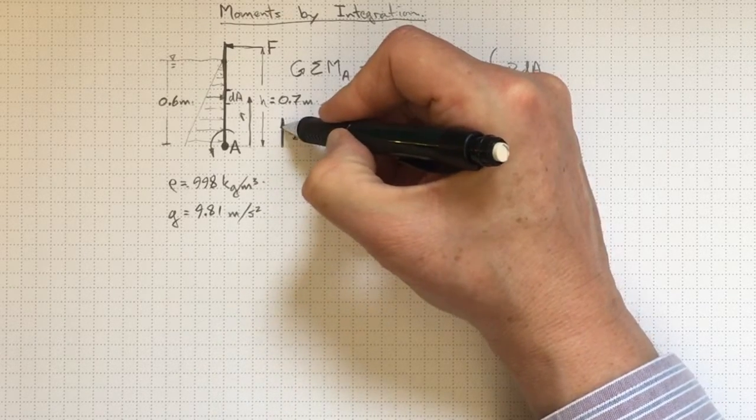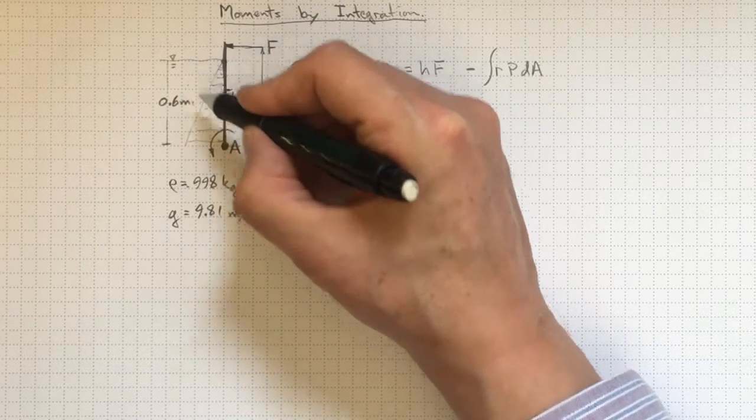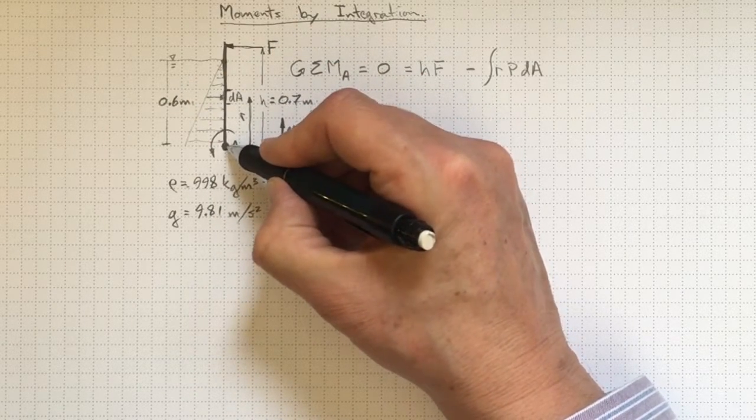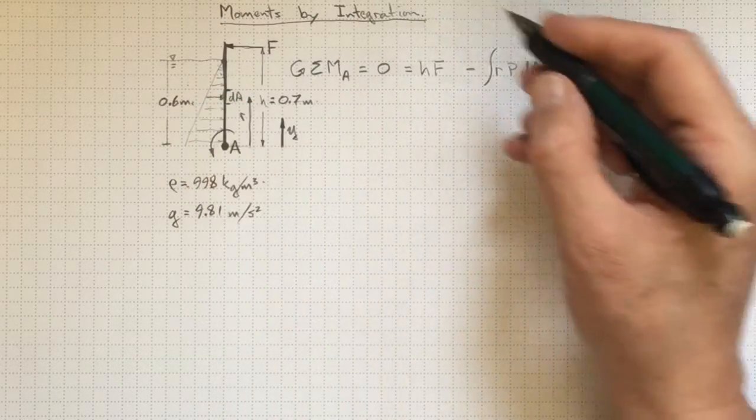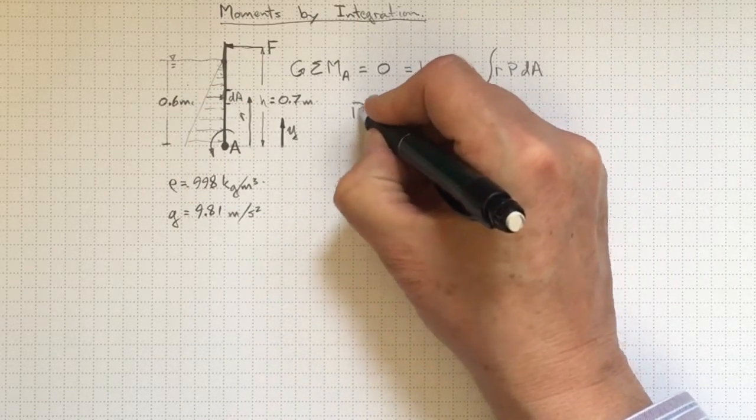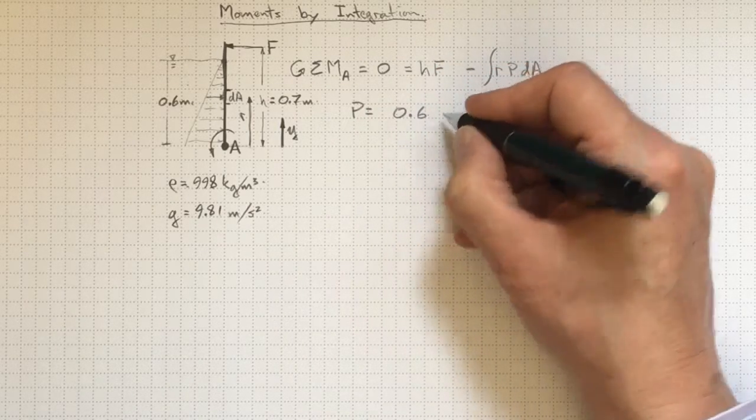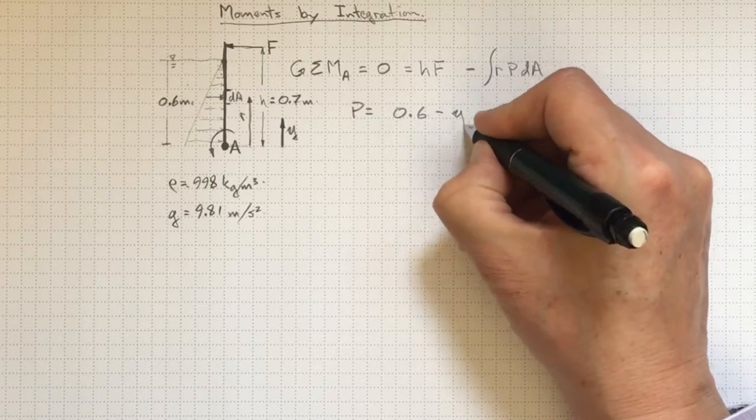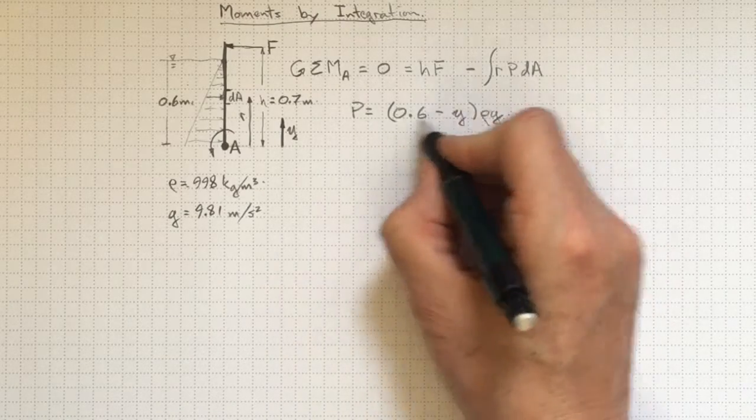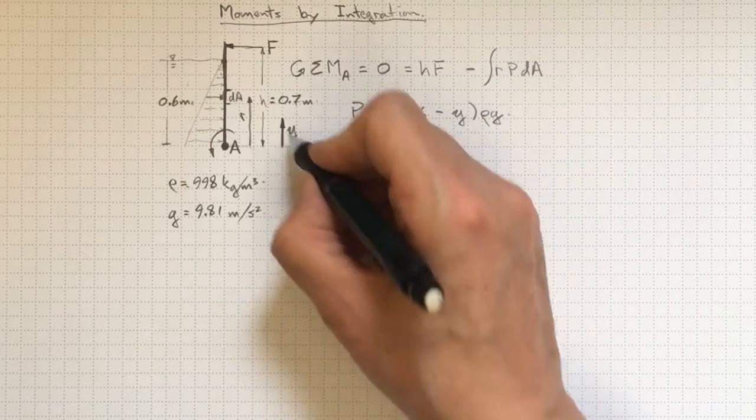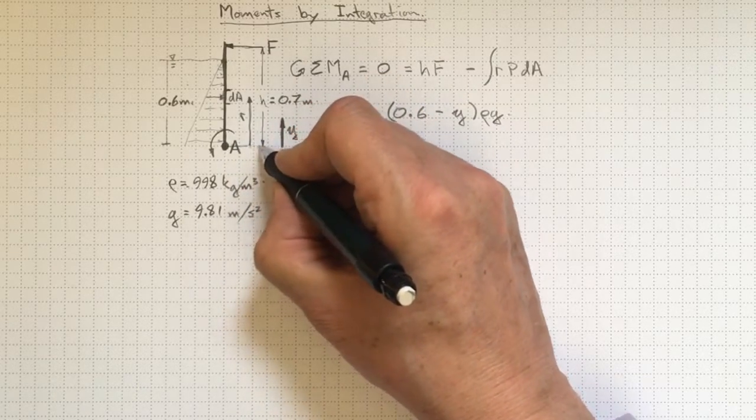as Y increases, I'm going up in the water, so the pressure is going to decrease. The pressure at Y equals zero is 0.6 meters. So I'll have a pressure equal to 0.6 at Y equals zero times rho g. It will go down for every increase in Y. And so there's an expression for pressure as a function of increasing Y dimension, where Y starts here at the hinge.